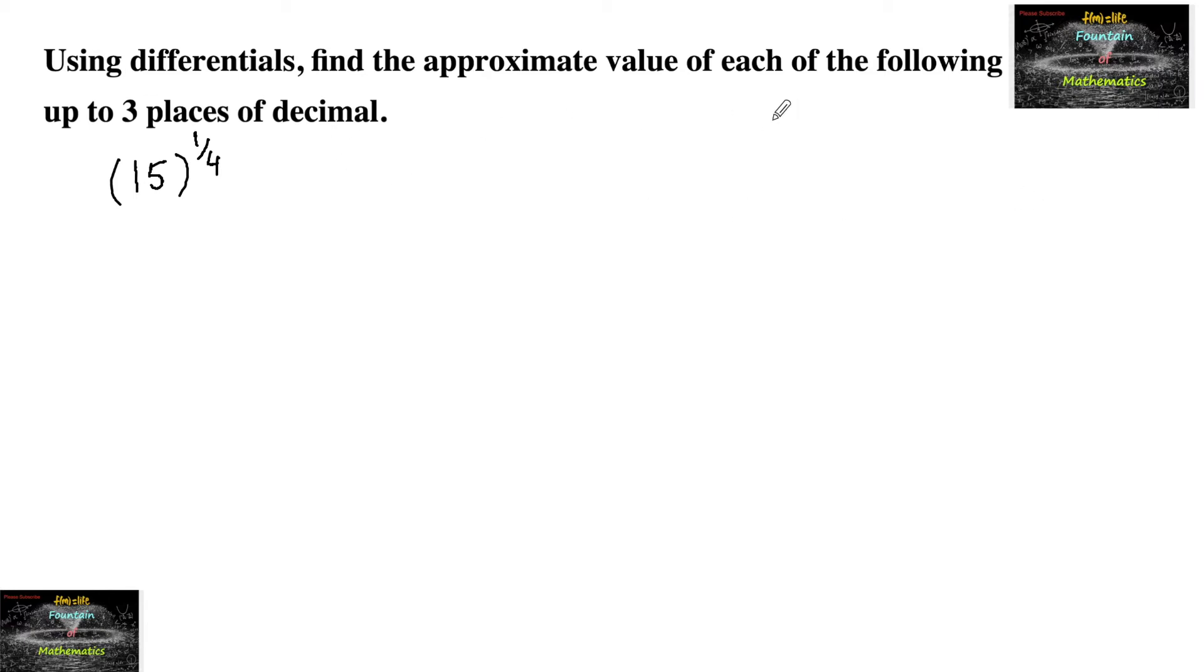Using differentials, find the approximate value of each of the following up to 3 places of decimal. So it is given 15 to the power of 1 by 4.